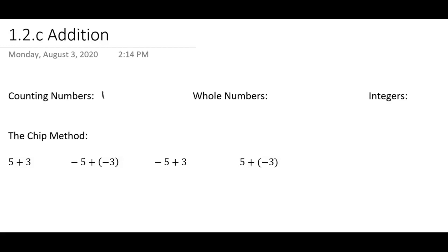We start with the counting numbers: 1, 2, 3, and so on. That's how we count. We don't start with 0, we start with 1. That's why they're called the counting numbers. They're also called the natural numbers, so you may see that in other math classes. Natural numbers and counting numbers are the same thing.